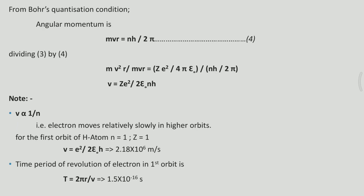From this expression, it is clear that the velocity varies inversely as n. That means, as the value of n increases, the velocity decreases. Therefore, the electron moves relatively slower in higher orbits.